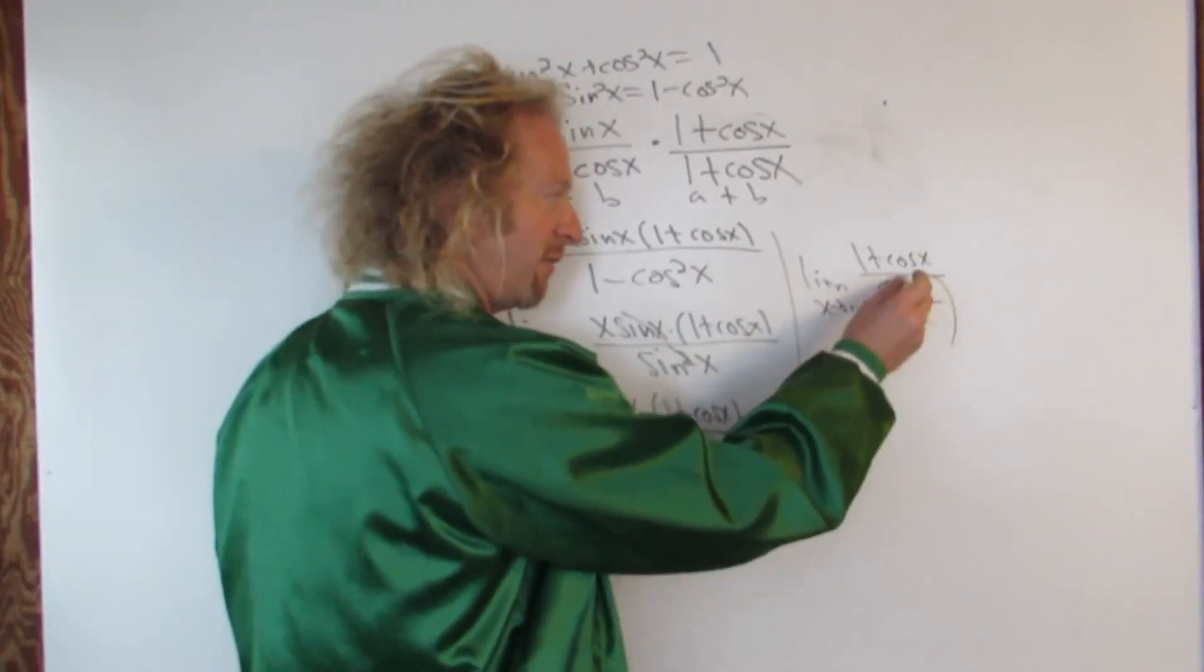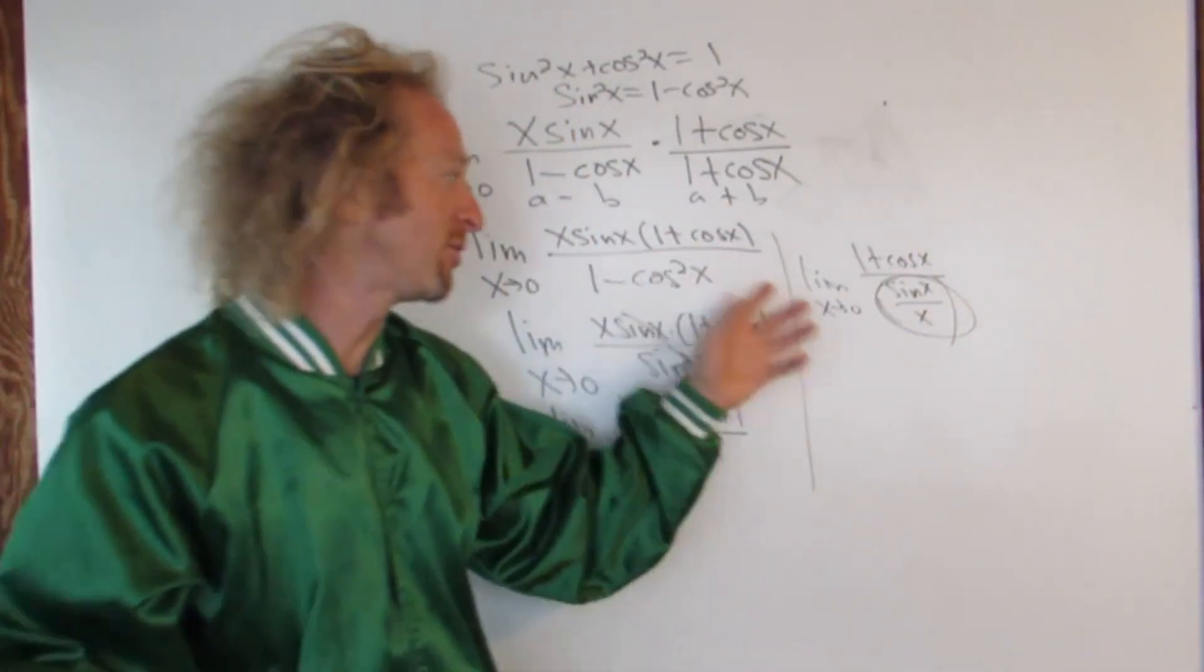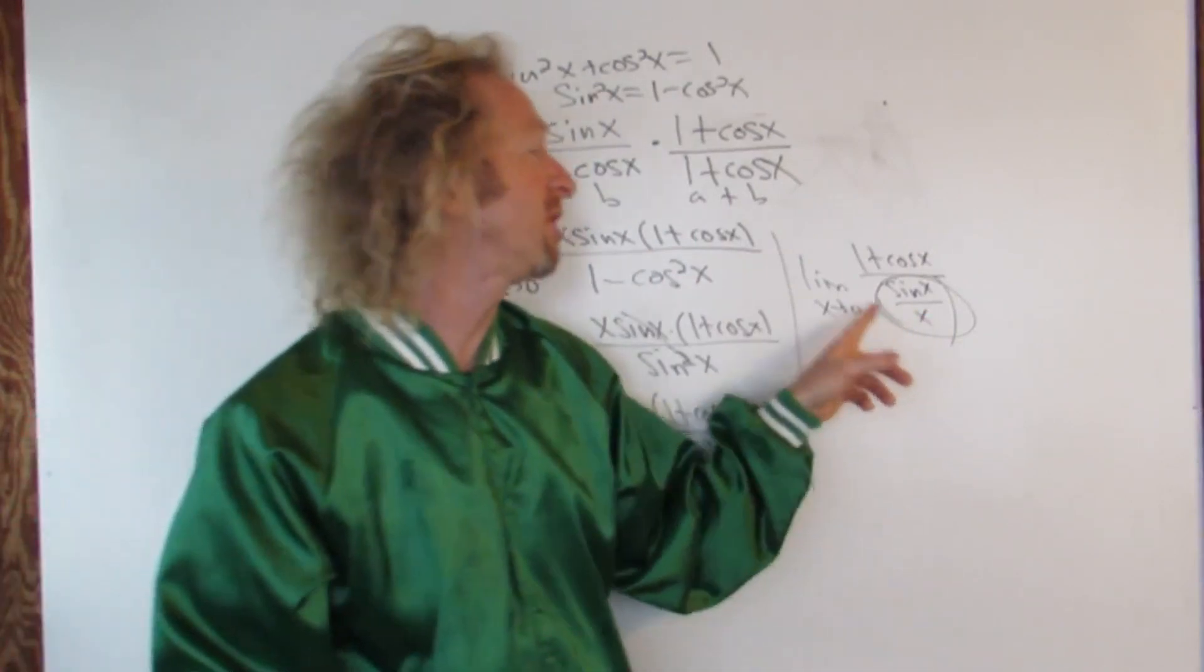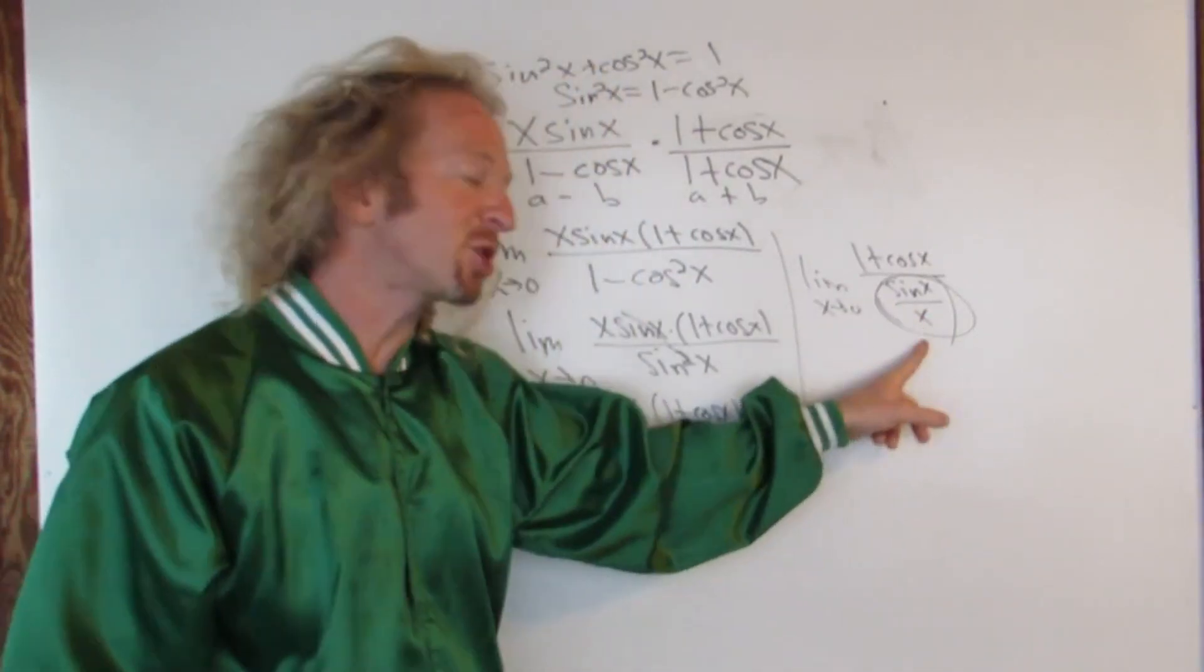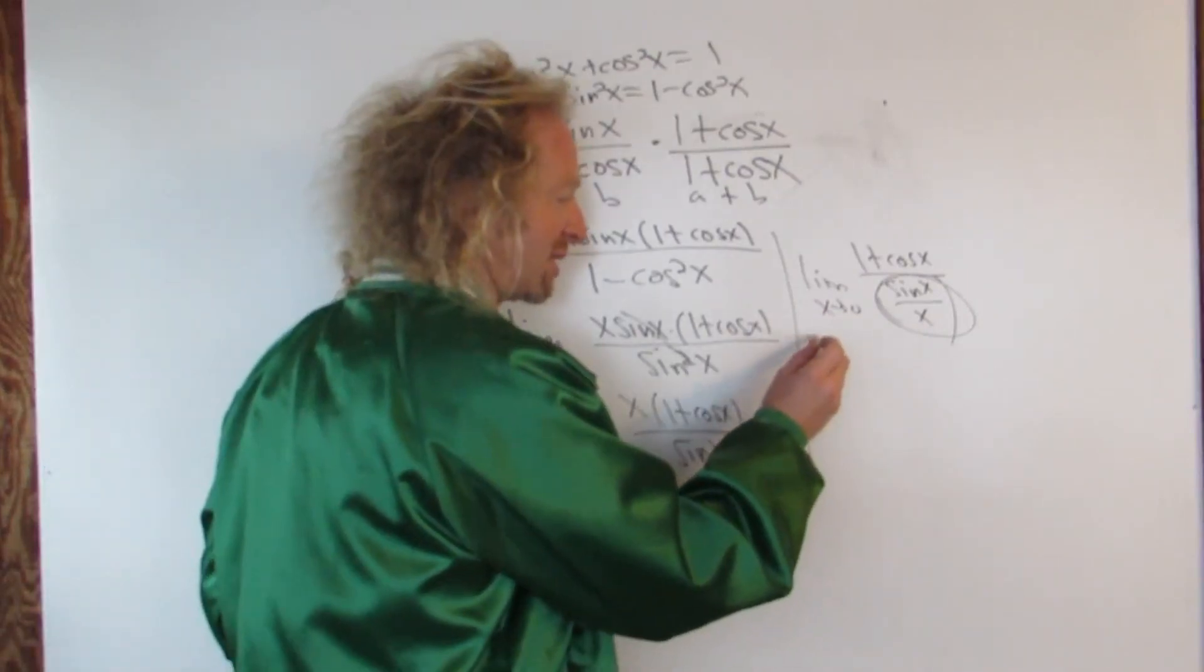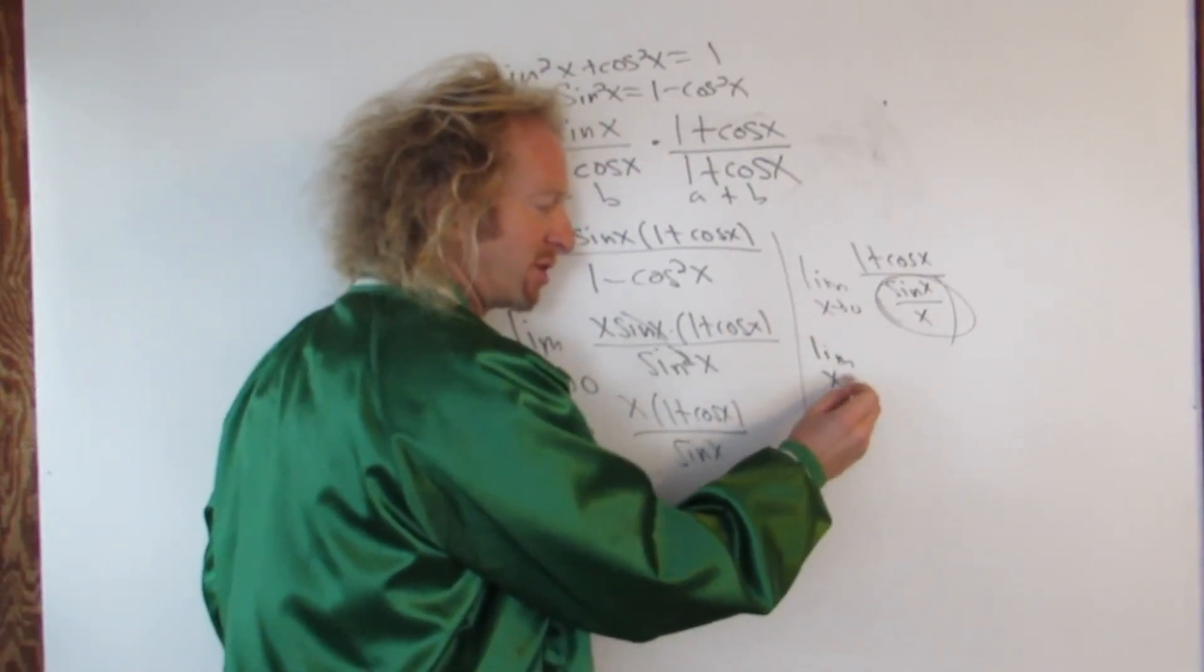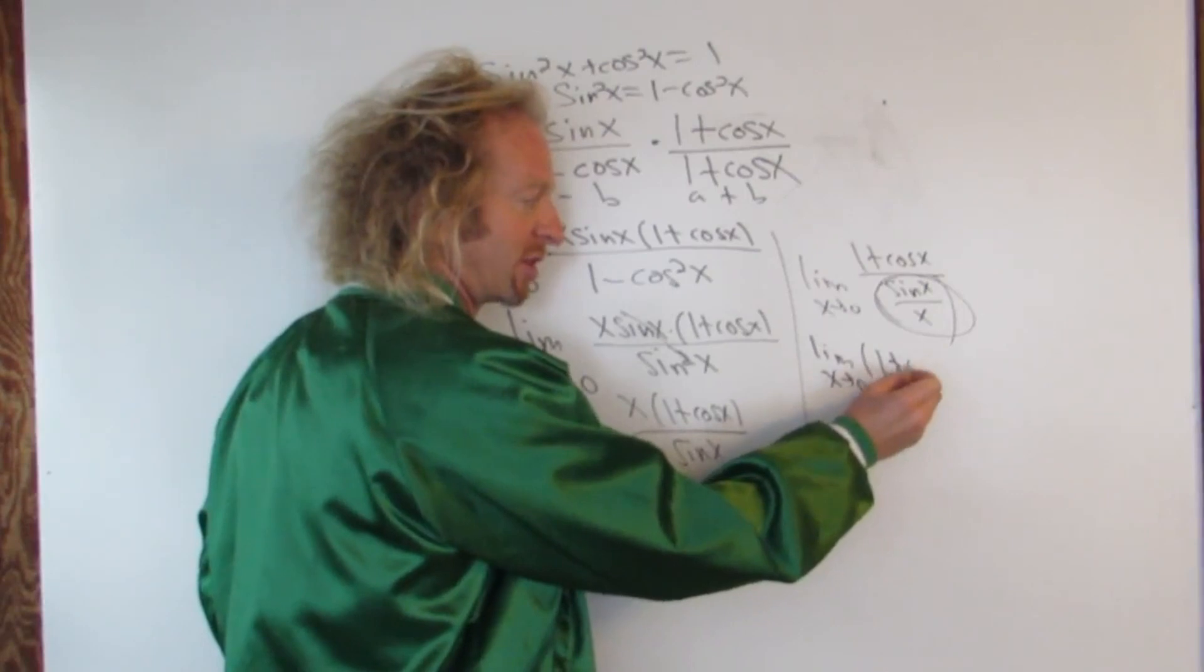And then this is a famous limit. It's not super famous, but famous enough to where we can use it. So if you take this limit as x approaches zero, you get one. So you can write this as limit as x approaches zero of the top piece, one plus cosine x.